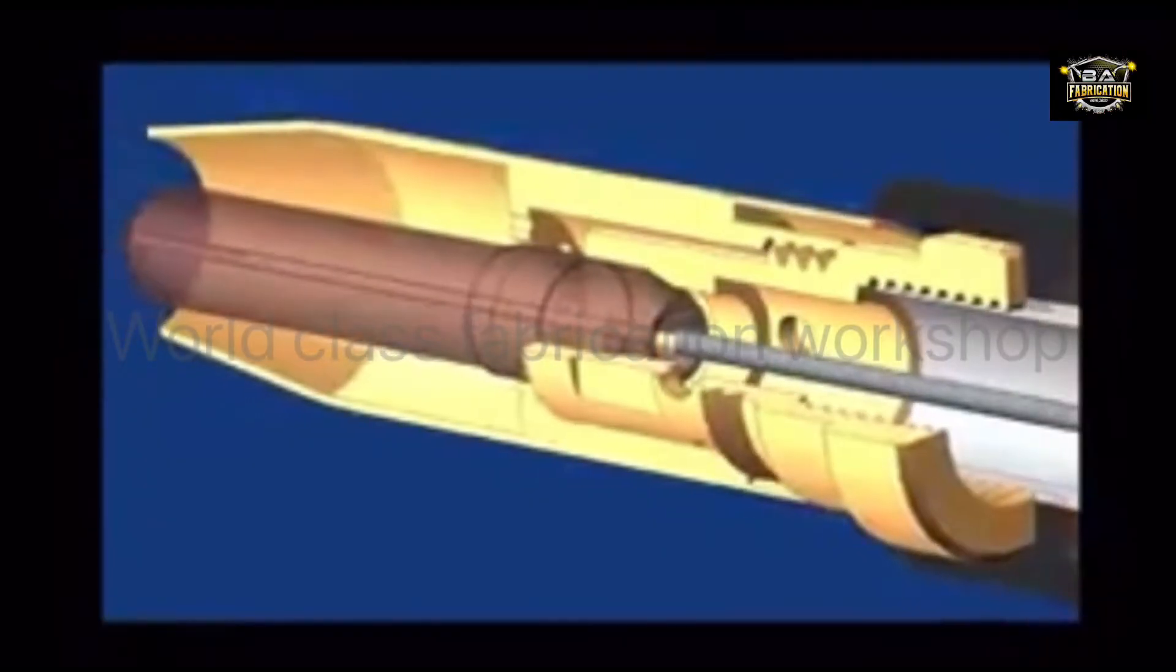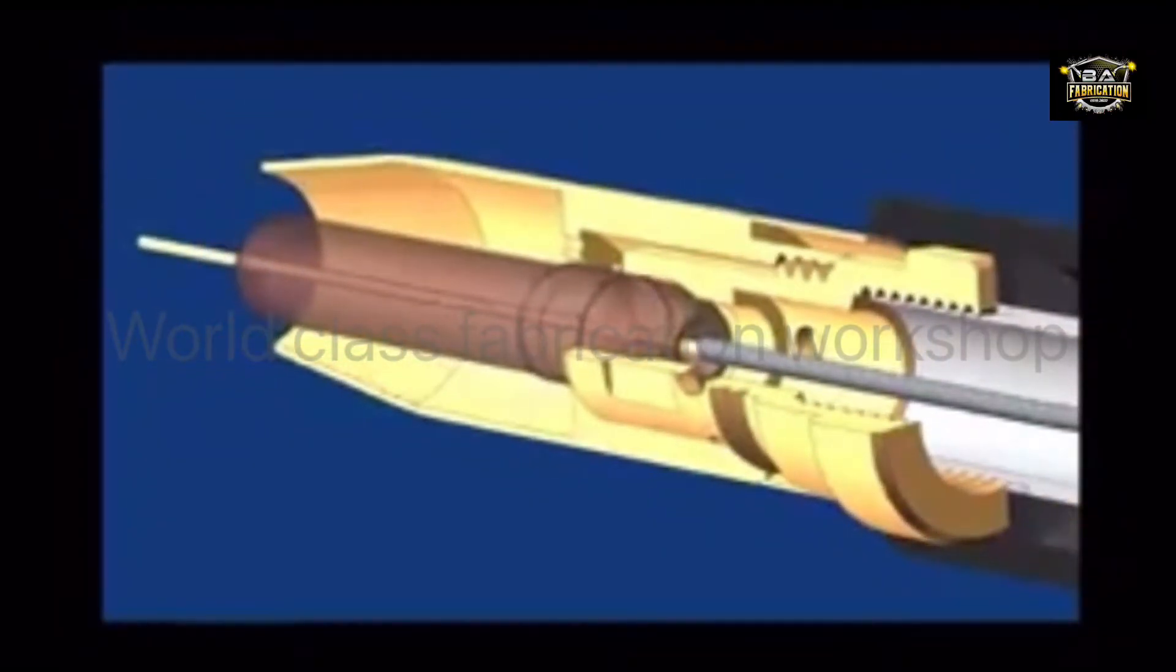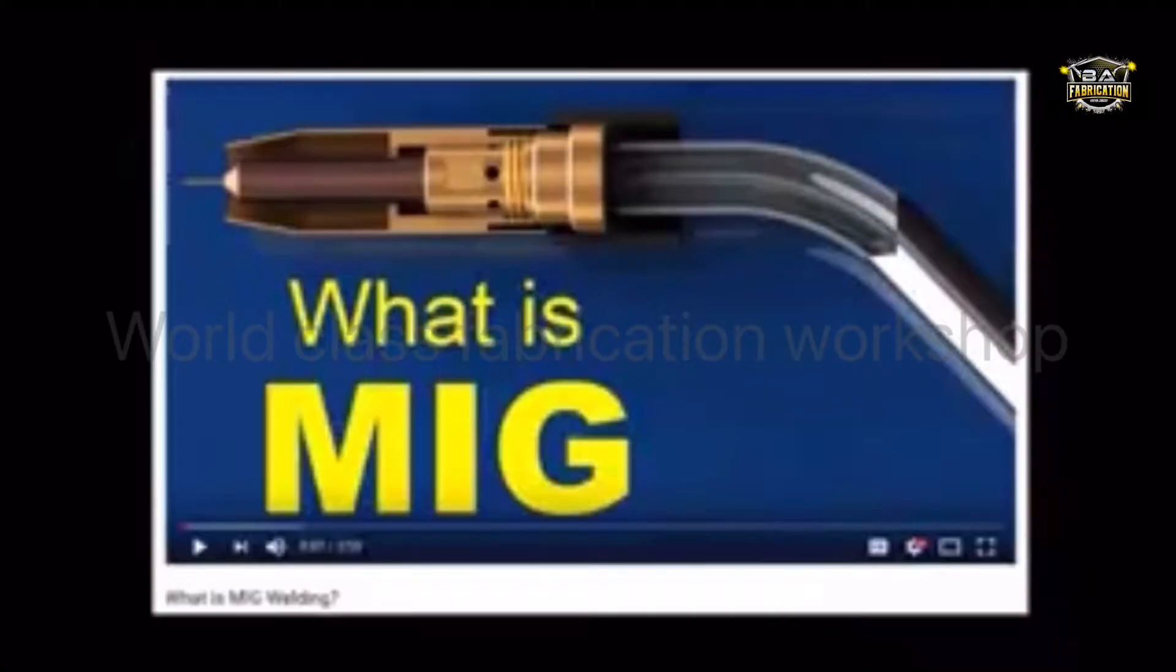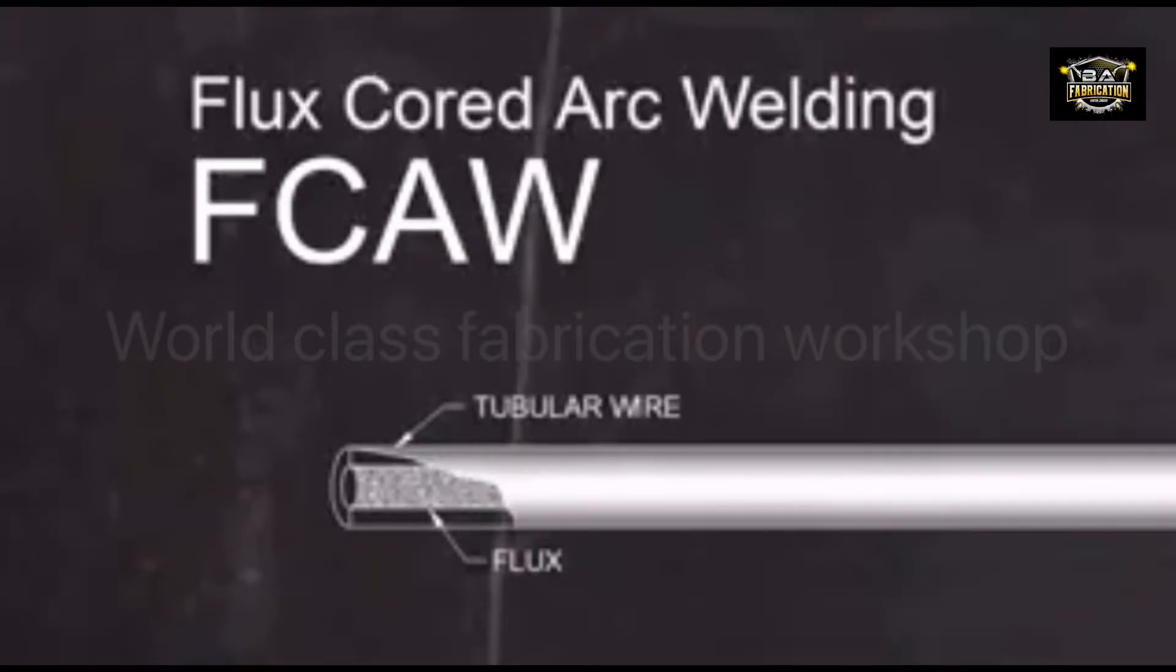All flux-core welding is done on equipment that is similar to, and sometimes identical to, the equipment used in MIG or gas metal arc welding. If you're not familiar with MIG welding, you might want to watch our what is MIG welding video before continuing. But you should understand that flux-core welding has some important differences from MIG welding.